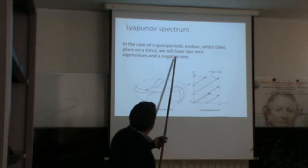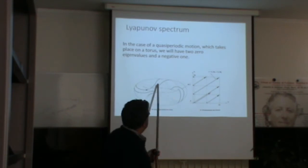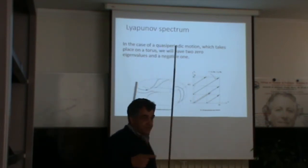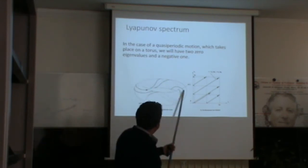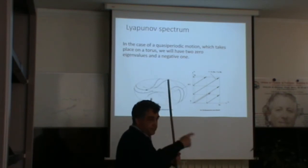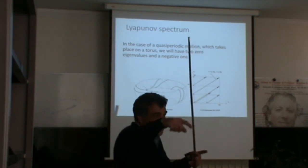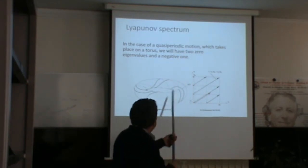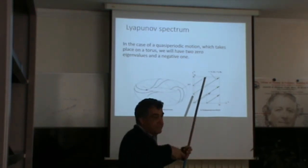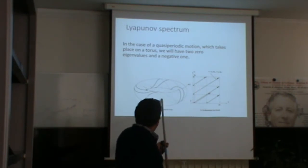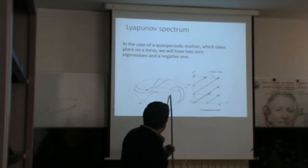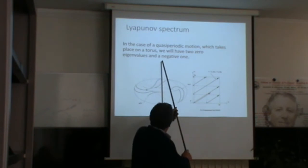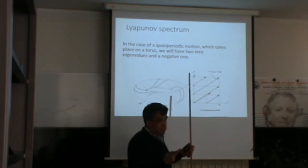What happens for more complex cycles — for instance quasiperiodic cycles? You need at least a three-dimensional space. You may have a motion on a torus, in which case you can have two zero Lyapunov exponents because the motion in two directions along the torus remains at roughly the same distance on average, while the transverse direction is contracting. Quasiperiodicity has two zero Lyapunov exponents, while a simple periodic cycle has just one zero Lyapunov exponent.